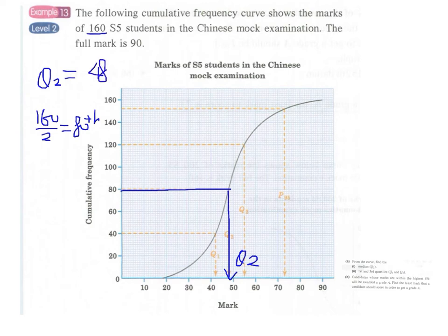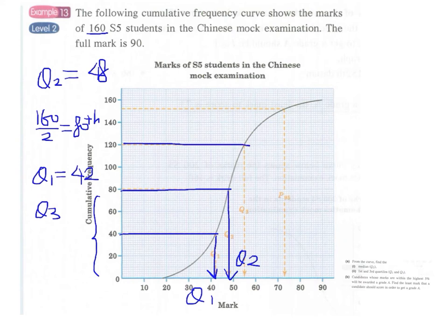And similarly for Q1 and Q3. For Q1, we again divide the lower half into two equal halves. That is, we have to find the 40th mark. This is Q1. This is about 42. And for Q3, we have to find the middle mark of the upper half. And again we read from the graph Q3. This is about 54.